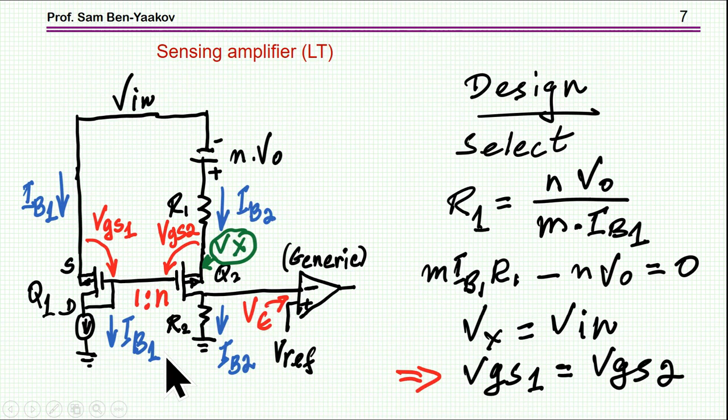So let's see what are the steps required to design this sampling amplifier. So first thing, I'm going to select R1 such that R1 is M N times Vout divided by M IB1, this is IB2.